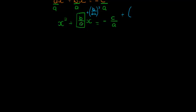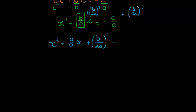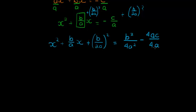On both sides, adding b over a divided by 2 gives b over 2a, squared. So now what I have is x squared plus b over 2a squared. On the other side, b over 2a squared becomes b squared over 4a squared, and then I have minus c over a. To add these two terms together, I multiply the numerator and denominator of c over a by 4a, so that becomes 4ac over 4a squared.